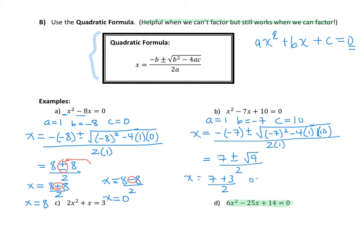So our x will equal 7 plus the square root of 9, which is 3, divided by 2, or x will equal 7 minus the square root of 9, which is 3, divided by 2. That gives us 10 divided by 2, which is 5, so x equals 5. Here we have 7 take away 3 is 4, 4 divided by 2 is 2. So those were the two answers we got by factoring. It's just a lengthier process when we use the quadratic formula here.